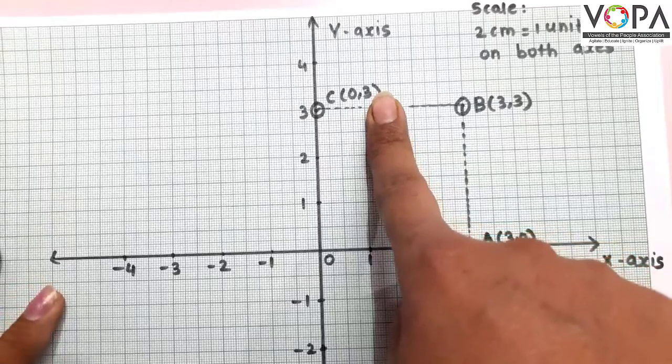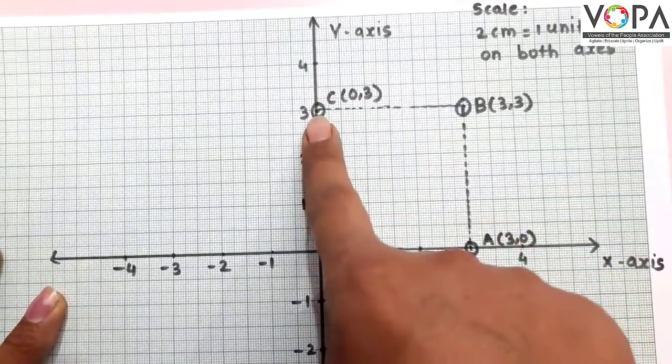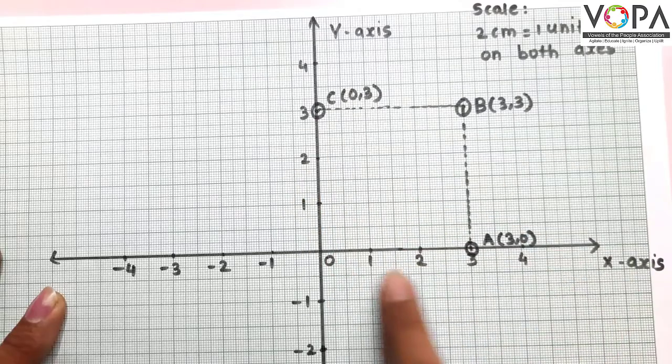By joining the line AB and BC, we get a square.